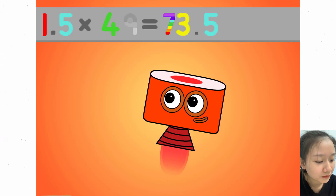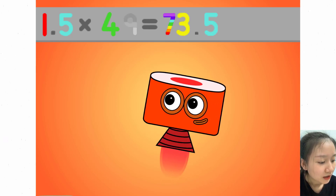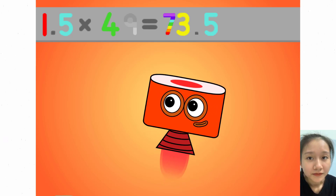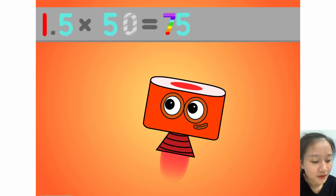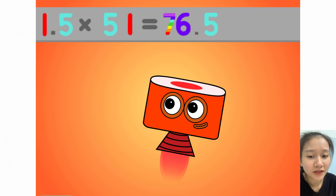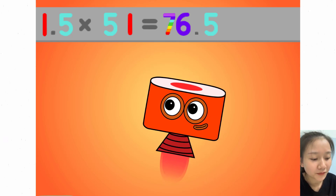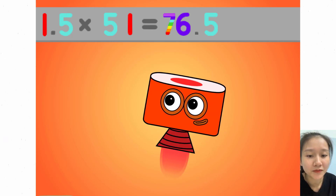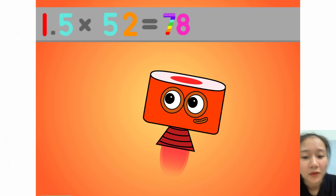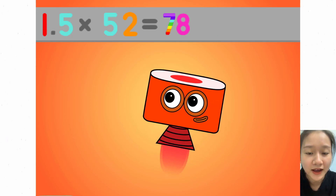1.5 times 49 equals 73.5. 1.5 times 50 equals 75. 1.5 times 51 equals 76.5. 1.5 times 52 equals 78.